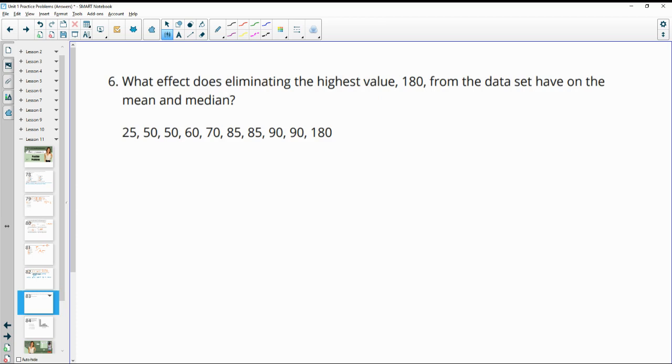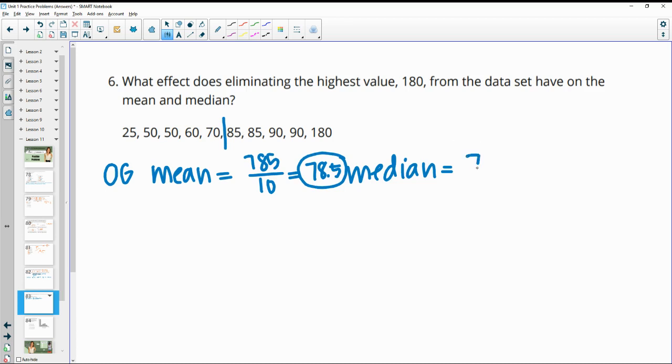Number six, what effect does eliminating the highest value 180 from the data set have on the mean and the median? So let's find the original mean and median. I'm going to call this the OG mean and median. So our original mean, if we add these all together, we get 785. And then there are 10 values. So we'll divide by 10 and that gives us a mean of 78.5. Then the median is going to be right here between the fifth and sixth value. So we're going to need to average those. So 70 plus 85 divided by two. And that's going to give us 77.5 for our original median.